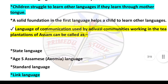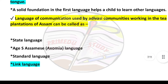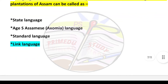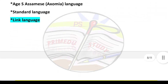Next question: The language of communication used by communities working in the tea plantations of Assam can be called — answer is option number four: link language.